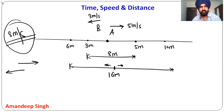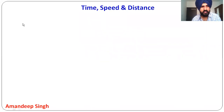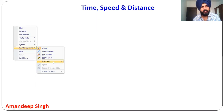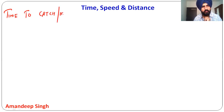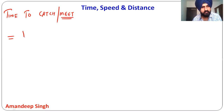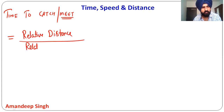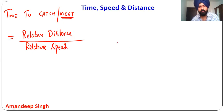Now, what is the use of this? The formula for time to catch or time to meet is: relative distance divided by relative speed. Both people are working relative to each other, so we use their relative speed — not their individual speeds — to find the time.